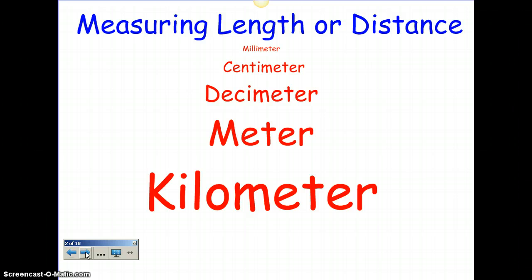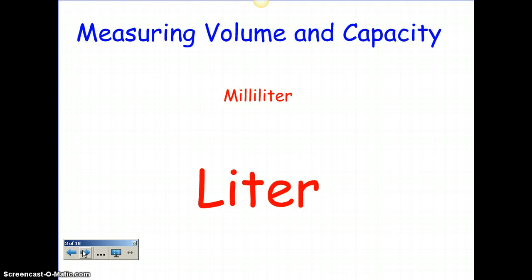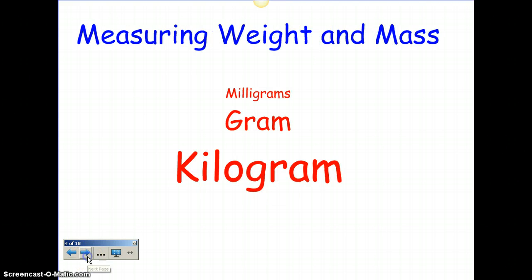First, we have a millimeter, and a millimeter is really small. Then we have a centimeter, which is a little bit bigger, a decimeter, a meter, and a kilometer. For measuring volume and capacity, you're going to use a milliliter and a liter. And for measuring weight and mass, you're going to use a milligram, a gram, and a kilogram.